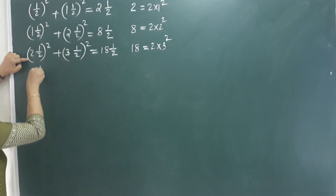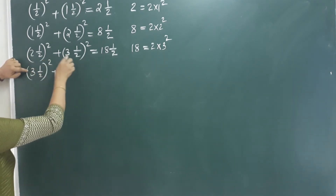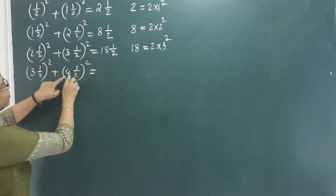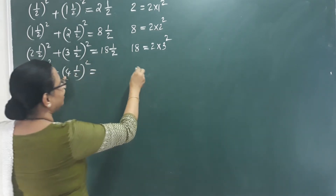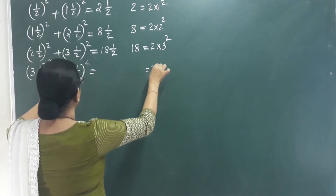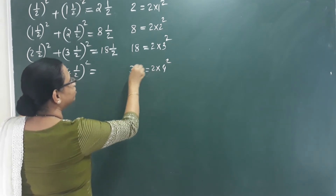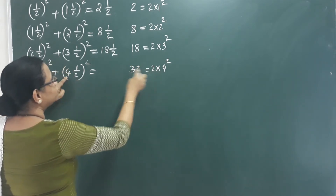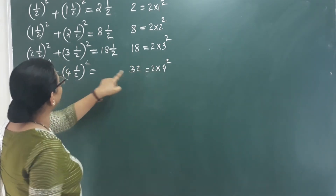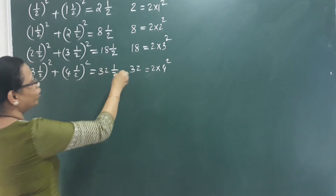For 4 and a half squared, 2 into 4 squared equals 16 into 2, which is 32. So 32 and a half is the answer.